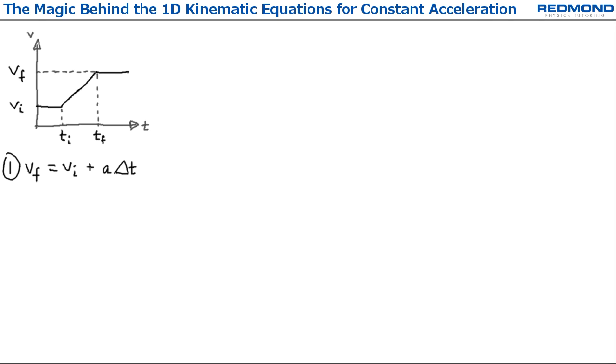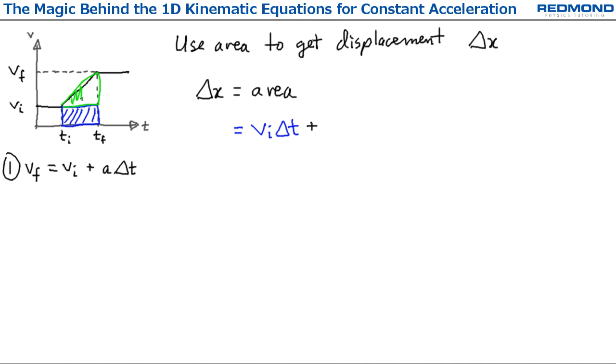For the second equation, I use the area of the Vt graph to get displacement, delta x. The area between Ti and Tf has two pieces: a rectangular piece with area Vi delta T, and a triangular piece with area of one half of Vf minus Vi times delta T.